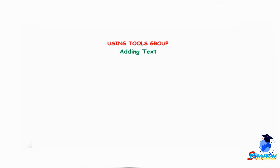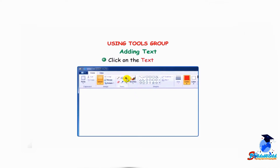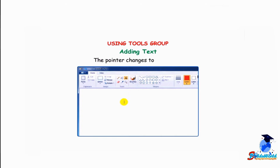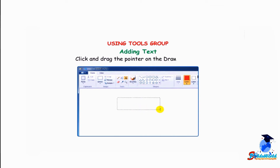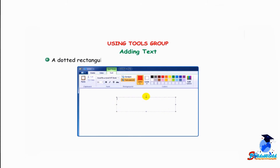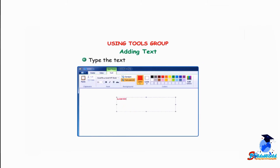Adding text: click on the text tool. The pointer changes to an eye shape. Click and drag the pointer on the drawing area where you want to place the text. A dotted rectangular box will appear with a blinking cursor inside it. Type the text as shown in the text box.